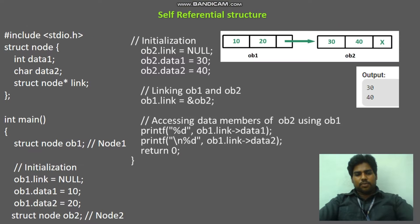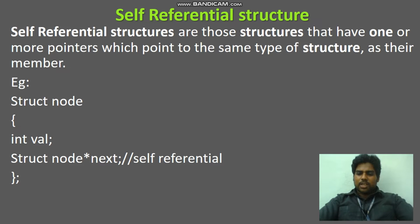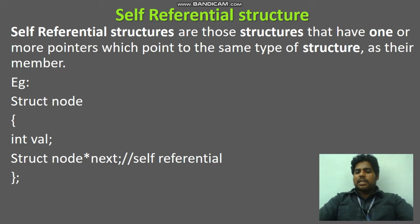What is self-referential structures? Self-referential structures are structures that have one or more pointers of the same type of structure as their members. That means, in the self-referential structure, there are various members, and it has one pointer data member of the same type of structure. The self-referential structure has one pointer variable as the member.